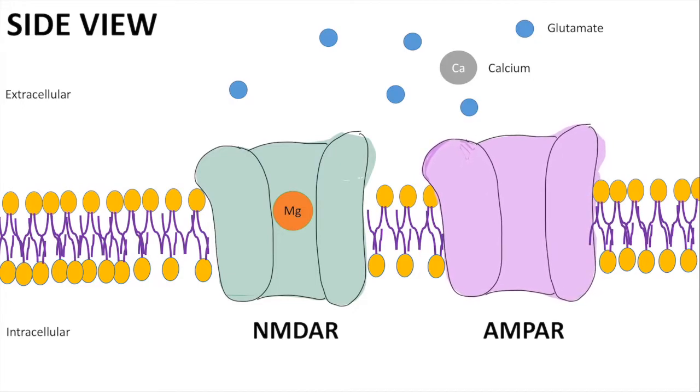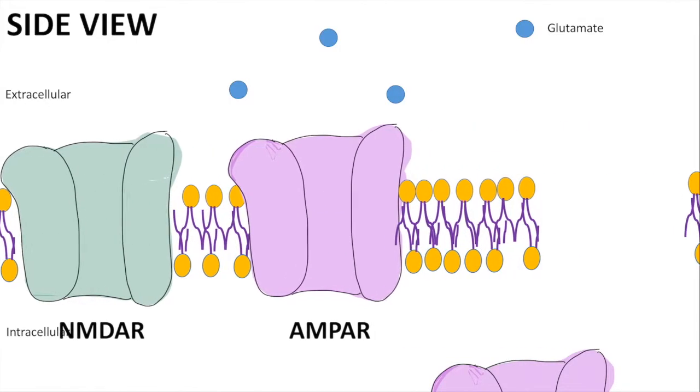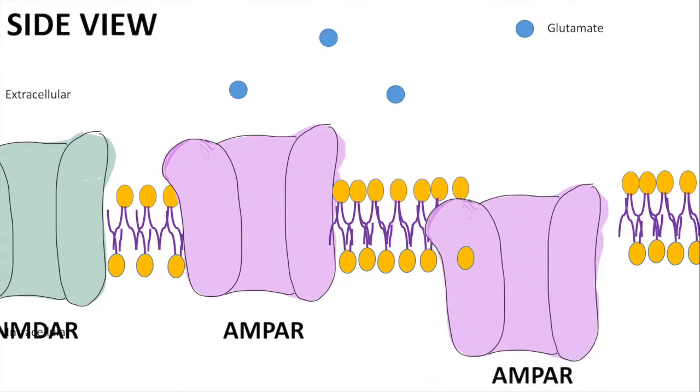AMPA receptors, on the other hand, will readily pick up glutamate and depolarize the cells. This causes the magnesium to be released and allows calcium to influx. The activation of NMDA receptor and influx of calcium not only excite the neuron, it also activates the pathway that allows more AMPA receptors to be inserted.